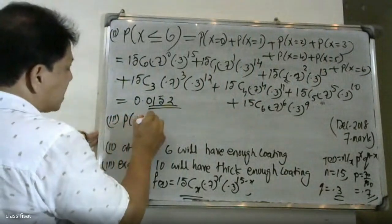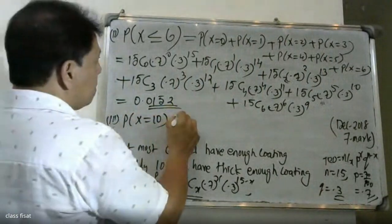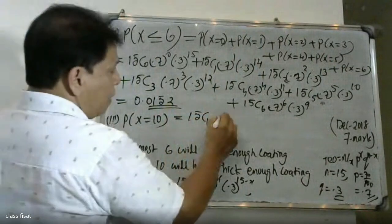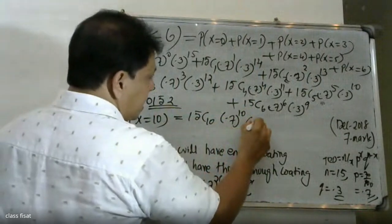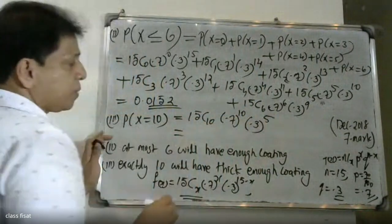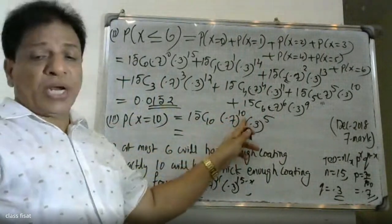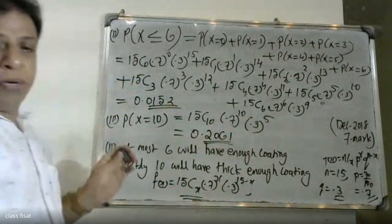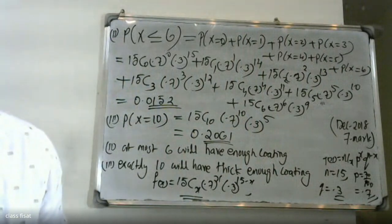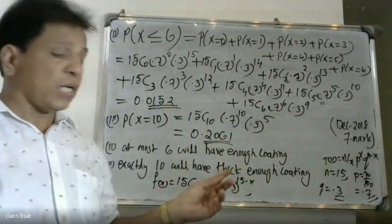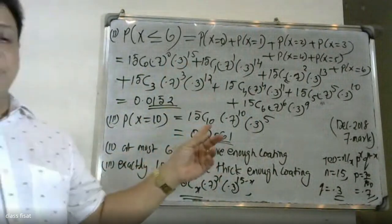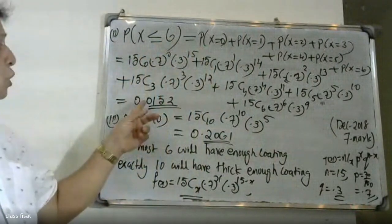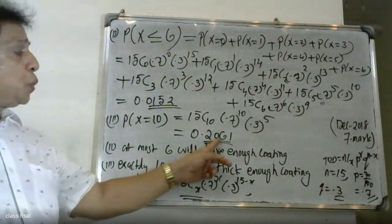For the third part, the probability that X equals exactly 10: we use 15C10 * 0.7 raised to 10 * 0.3 raised to 5. Calculating this gives the answer 0.2061. So the three answers are: at least 12 gives 0.2969, at most 6 gives 0.0152, and exactly 10 gives 0.2061.